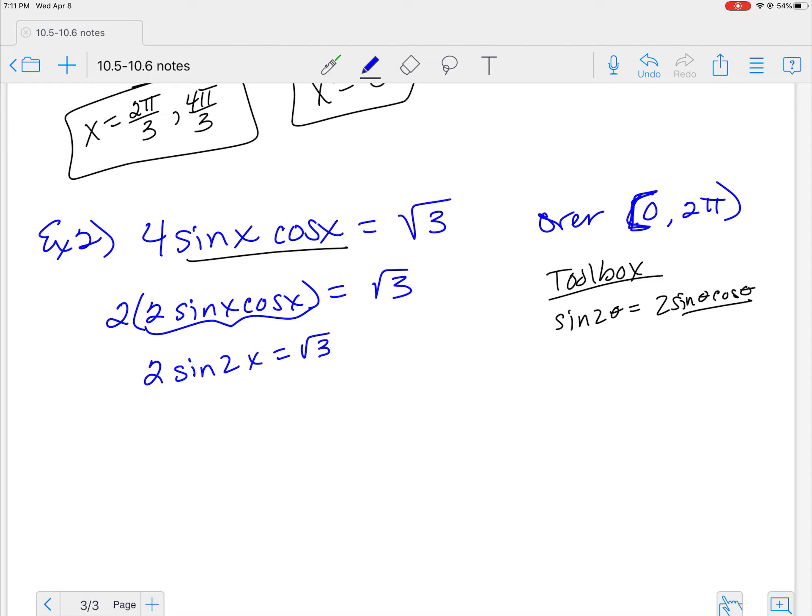So I'm going to break up this 4 to be 2 times 2. This is now my double angle. 2sin(2x) = √3. Now I have this double angle. So I isolate that. √3/2 is a nice, good, obvious situation that we're looking at. But here's what's going down. Because this is a double angle.